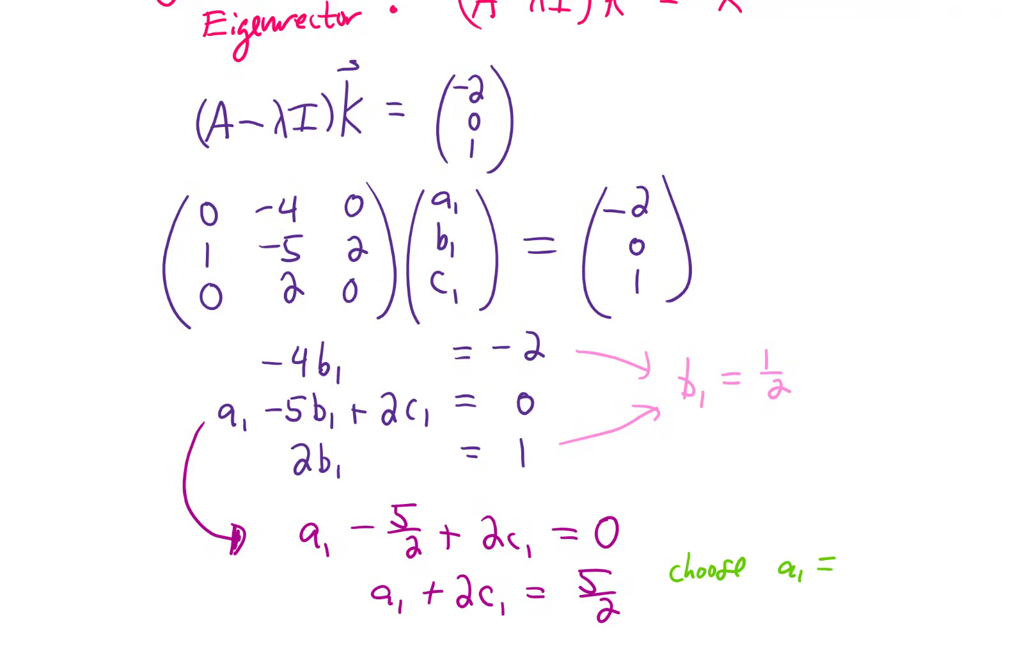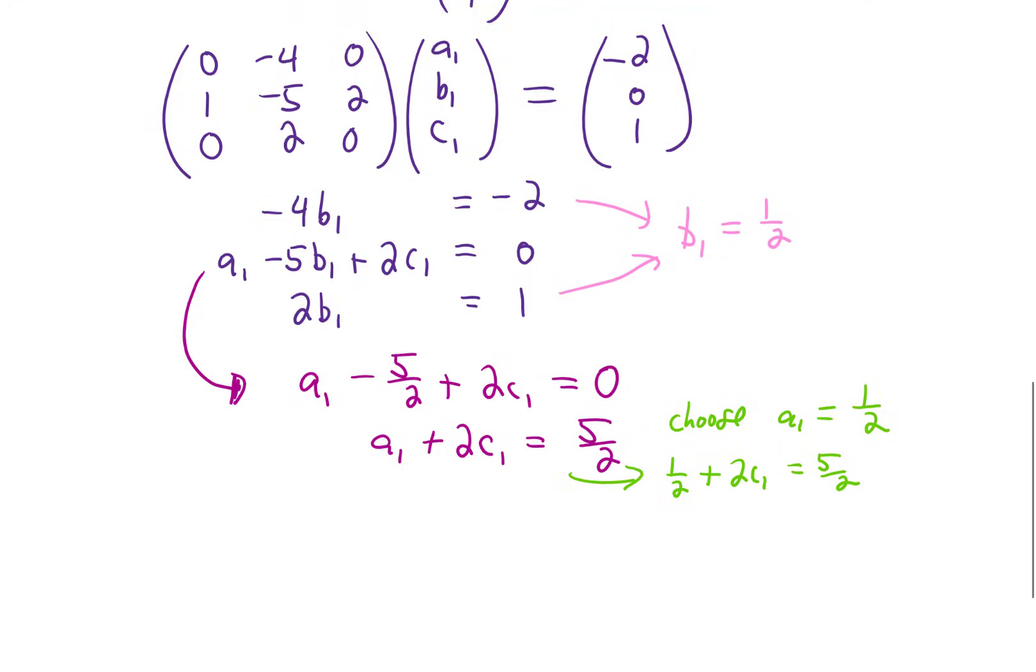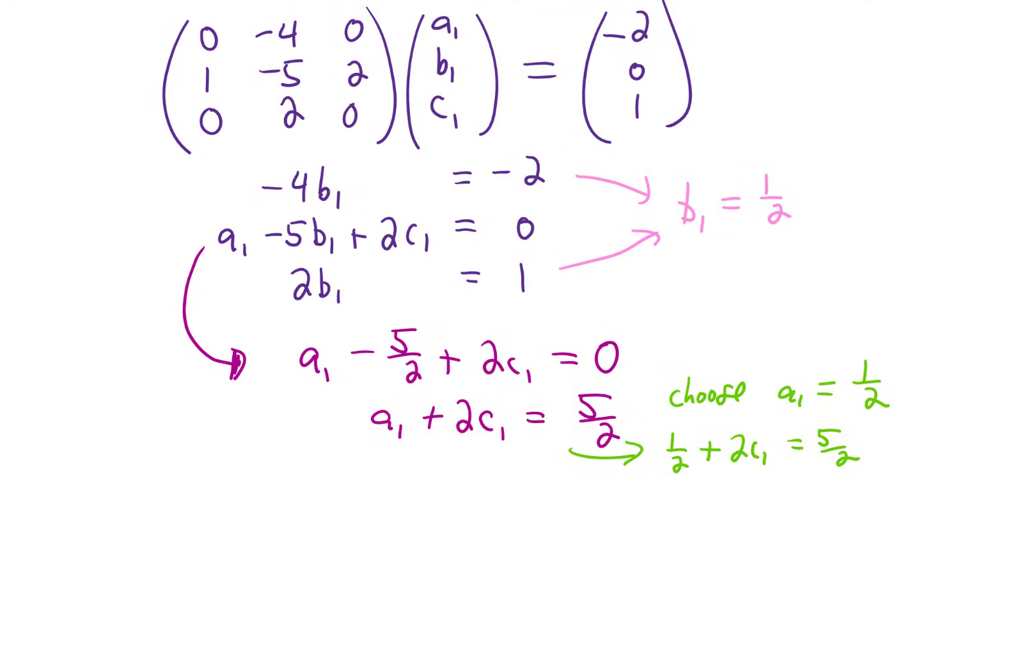It's not uncommon to just choose a₁ or c₁ equals zero. But just for fun, maybe I will choose a₁=1/2. If we do make that choice and plug that a₁=1/2 back into this equation, we can subtract one half, we get c₁=1. This ultimately gives us our generalized eigenvector, which we're calling k, as (1/2, 1/2, 1).